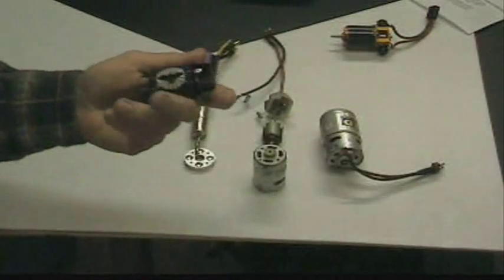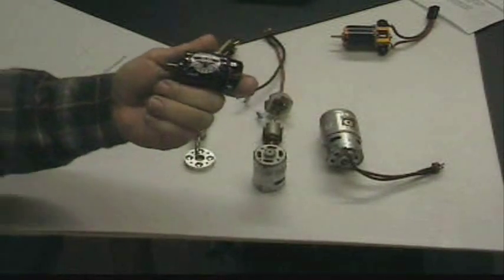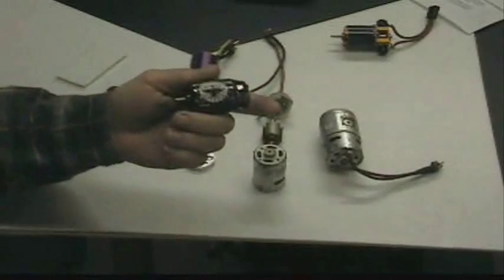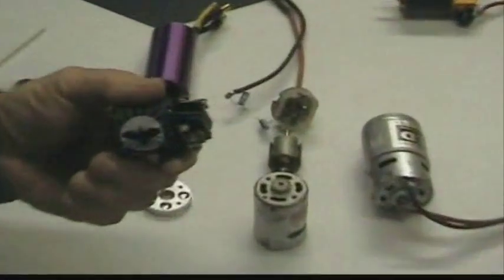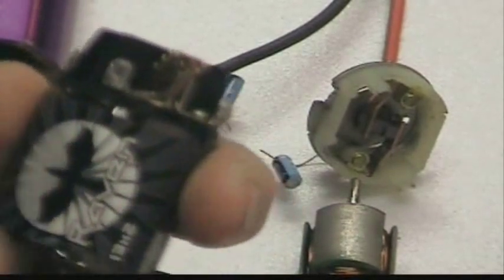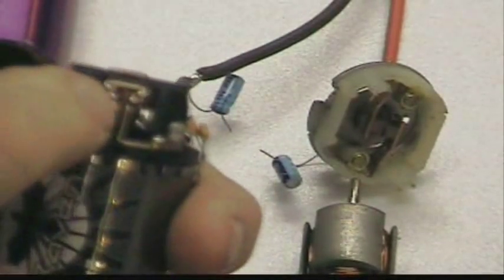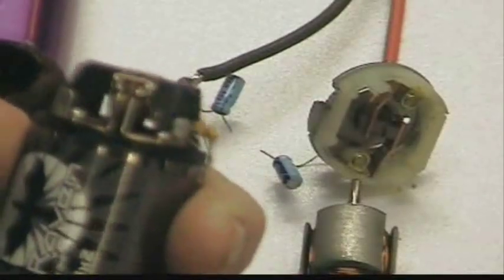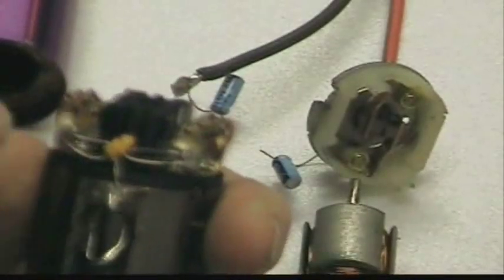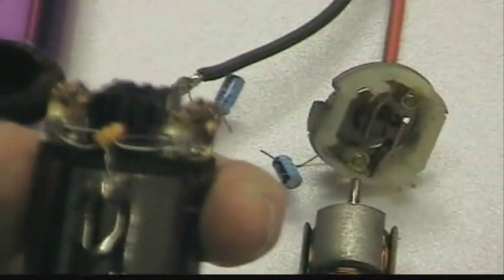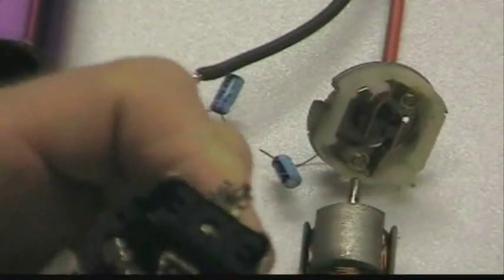This is one of the more modern brushed motors. Let me see if I can show you. Here we have the brush hoods. These brushes are going in at a 30 degree angle. See, they're going in like this.